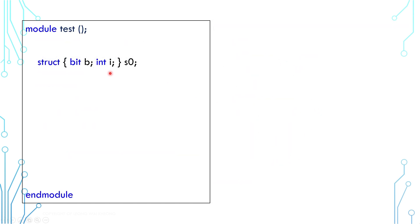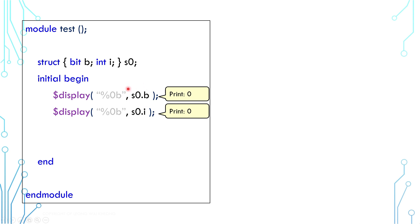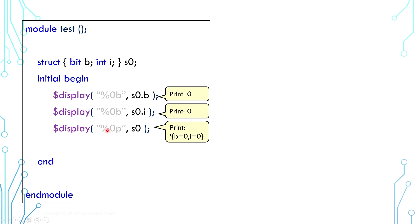Let's look at the ecosystem around structures. We already know about the dot operator for accessing members of a struct. We can display an individual member value in a conventional manner. There is also a formatter, %p, which is used by aggregate variables like struct. It will print the name and value of every member within the struct — for example, b equals 0 and i equals 0.